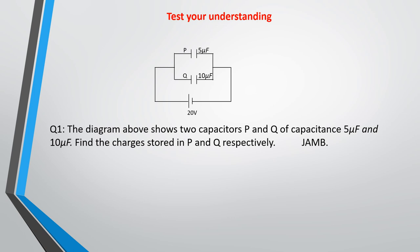Here is a test question for you: the diagram shows two capacitors P and Q of capacitance 5 microfarad and 10 microfarad. Find the charges stored in P and Q respectively. Since they are in parallel, find the individual charge in each: Q = C × V for each capacitor separately.